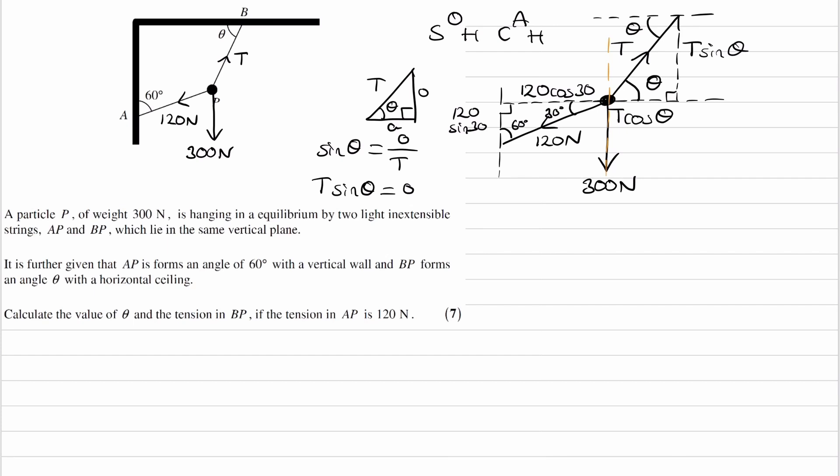And in terms of the directions of these components, the T cos theta goes towards the right, the T sine theta goes upwards, and those two will add up to make this vector.